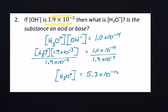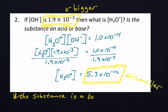We get H3O+ concentration equals 5.3 times 10 to the negative 12th. That's a really small number. 1.9 times 10 to the negative 3rd is a larger number. Since OH- is larger than H3O+, the substance is a base.